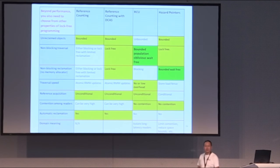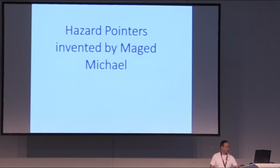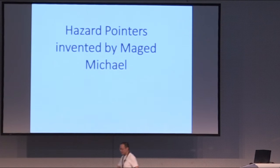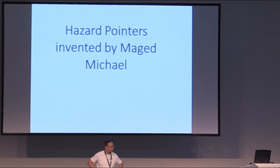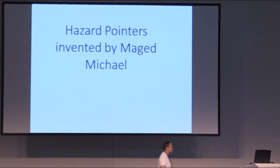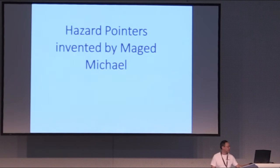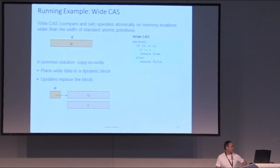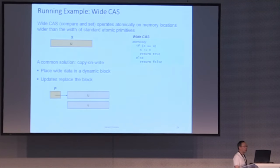If you want something better, you need to move to either RCU or hazard pointers. Before I left IBM, I worked with these guys at IBM Research. Maged Michael is one of the world's most famous inventors of lock-free programming techniques, specifically regarding hazard pointers. The other is Paul McKenney, who invented RCU. Even though I've left IBM and Maged is now working for Facebook, we continue working together to bring this to the C++ standard.